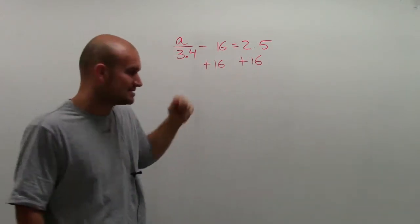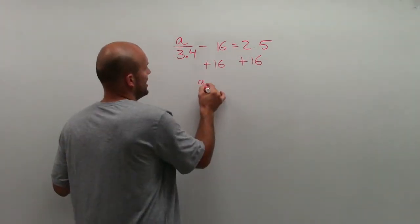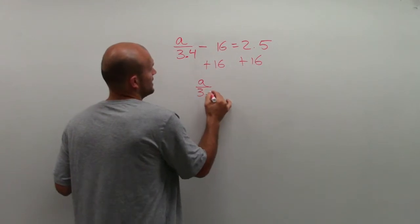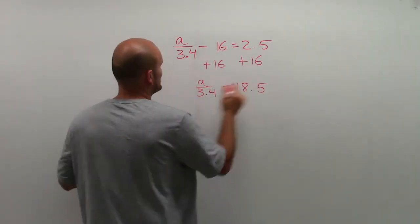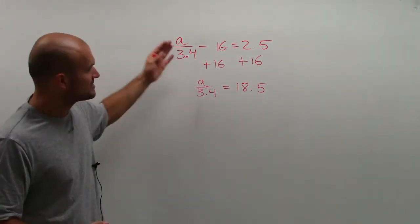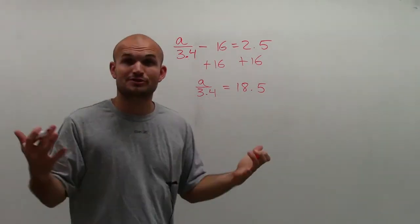So I'm subtracting 16. So I add 16 on both sides, addition property of equality. So now I've produced equivalent equations. I've not changed my answer at all. Since I worked on both sides of the equation, we're still good.